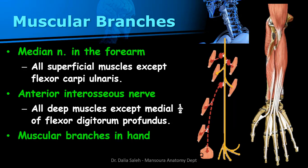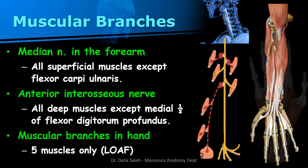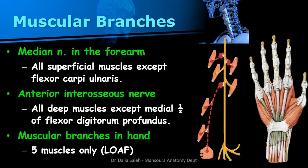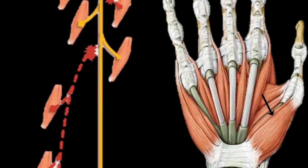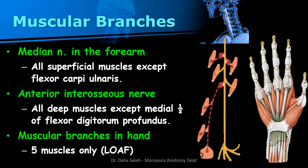In the hand, the median nerve gives muscular branches to five muscles, remembered by the mnemonic LOAF: the lateral two lumbricals, the opponens pollicis, the abductor pollicis brevis, and the flexor pollicis brevis. The last three muscles form the thenar eminence.